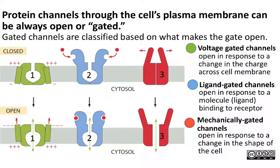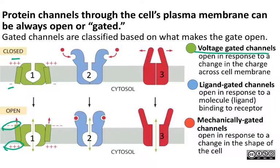The first type are voltage-gated channels — they can be opened by a change in voltage. The sodium-potassium pump sets up a difference in electrical charge inside and outside the cell. Voltage-gated channels open when there is a change in charge across the cell membrane, and each different type of voltage-gated channel opens and/or closes at a different charge. When the charges flip, that leads to a shape change in the channel and material can move through based on concentration gradient — this is an example of facilitated diffusion.